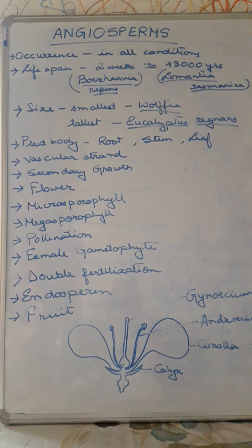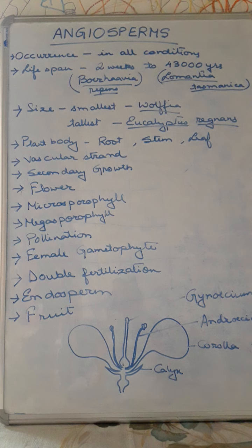If we see the phylogenetic hierarchy, we observe that algae is succeeded by moss or bryophytes, which is succeeded by pteridophytes, and finally the higher plants.